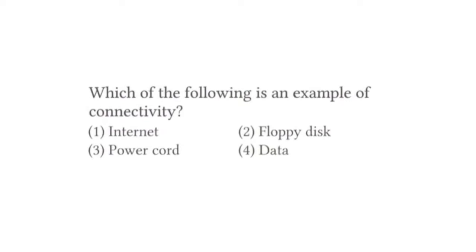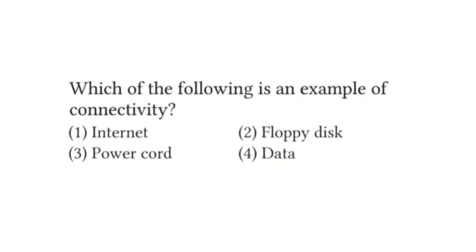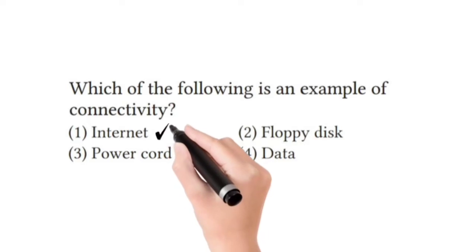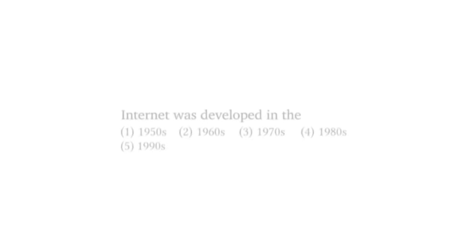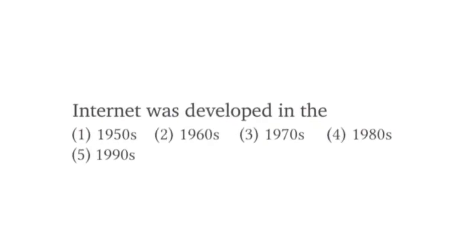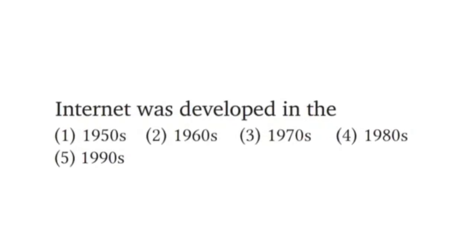Which of the following is an example of connectivity? Internet — we connect millions of computers and servers and then we use the internet, so the correct answer is internet. Next question: internet was developed in the 1950s, so the correct answer is the 1950s.